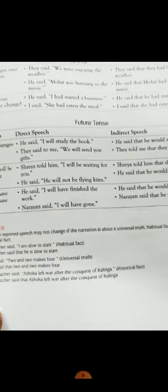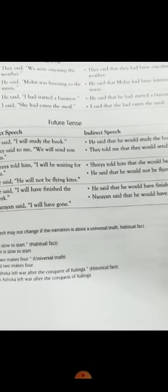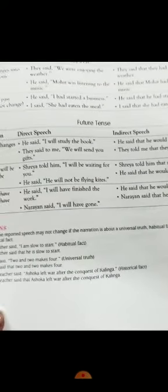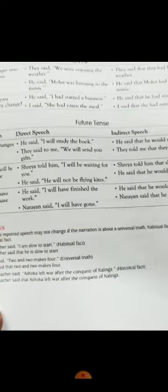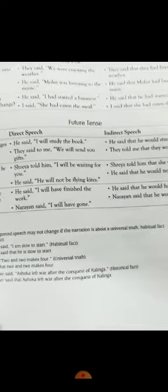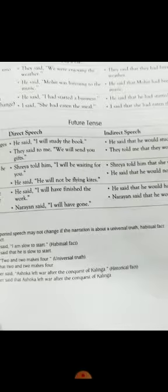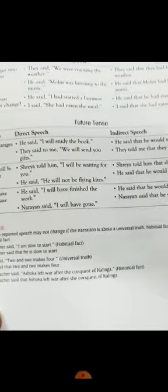Next sentence: He said, 'I will have finished the work.' 'Will' changes to 'would.' He said that he would have finished the work. Next: Narayan said, 'I will have gone.' Narayan said that he would have gone. So, students, after this you will be able to change the future tense into indirect speech.